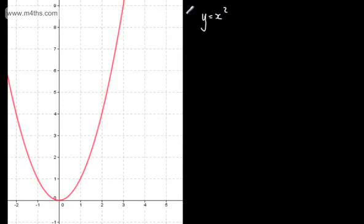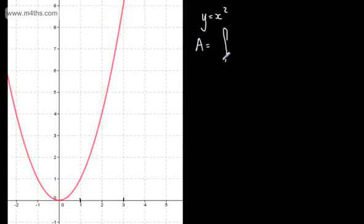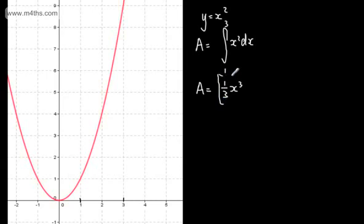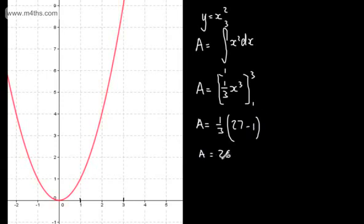An example might be y equals x squared. If we took y equals x squared and chose two points on the x-axis, let's say 1 and 3, we could find the area trapped under the curve by integrating. So the area equals the integral from 1 to 3 of x squared dx. Integrating gives one-third x cubed, evaluated from 1 to 3. Substituting the limits: one-third of 27 minus one-third of 1, giving 26 over 3 units squared. That's the exact area trapped under the curve y equals x squared from 1 to 3.